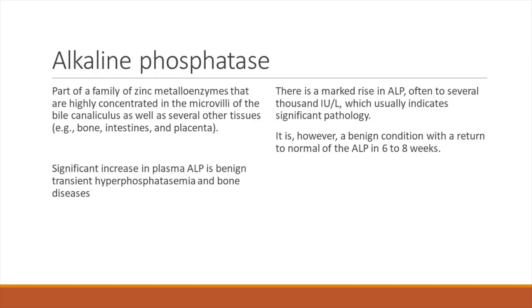ALP is part of the family of zinc metalloenzymes that are highly concentrated in the microvilli of the bile canaliculi as well as several other tissues like bone, intestine, placenta, and also in RBCs. A significant increase in plasma ALP can be benign and transient — it can be seen in growing children, and with non-liver conditions like vitamin D deficiency, transient hyperphosphatemia, and other bone disorders. Usually if this ALP rise is a benign condition, it returns back to normal in 6 to 8 weeks. But a marked increase in ALP to several thousands usually indicates a pathology.